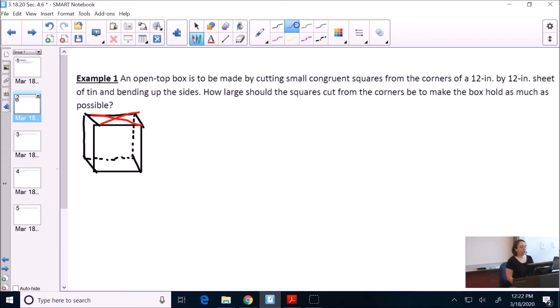So an open top box is to be made by cutting small congruent squares from the corners of a 12 inch by 12 inch sheet of tin and bending up the sides. So we're actually starting off with a sheet. And it says it's 12 by 12, so I'm going to draw a square. Now, what we're going to do is we're going to cut the corners from this. So each of the corners of this sheet is going to get cut out.